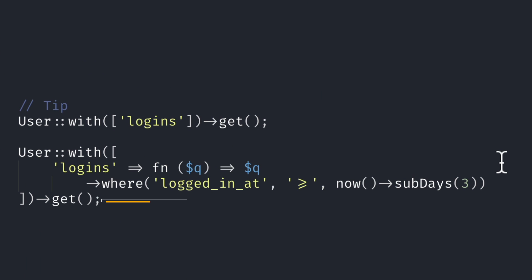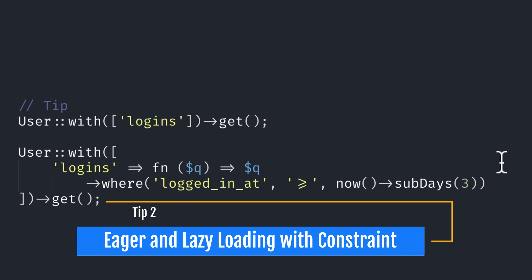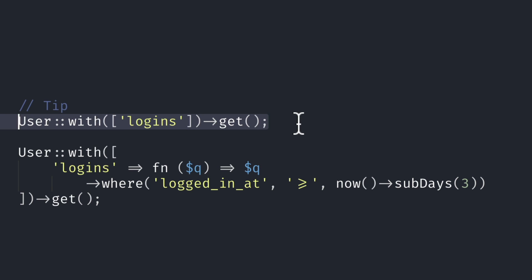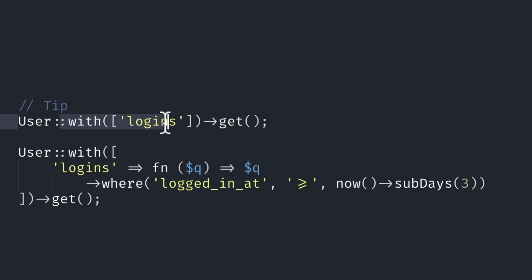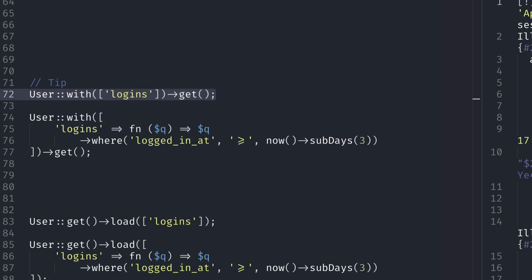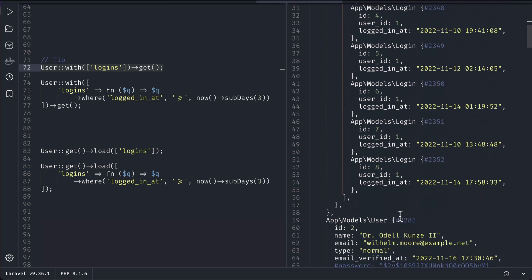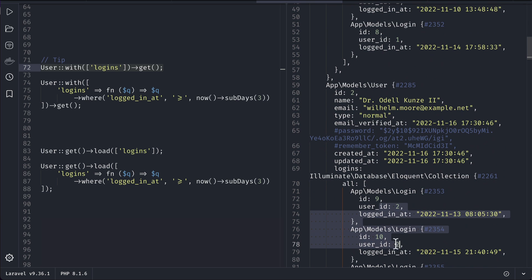Now let's move to the second tip, which is regarding eager and lazy loading. You might already know we can eager load a relationship like this: User::with('logins'). A user can have many logins — I have a hasMany logins relationship on the User model. With this we can get all the logins of particular users, and you can see all the logins of those users here.